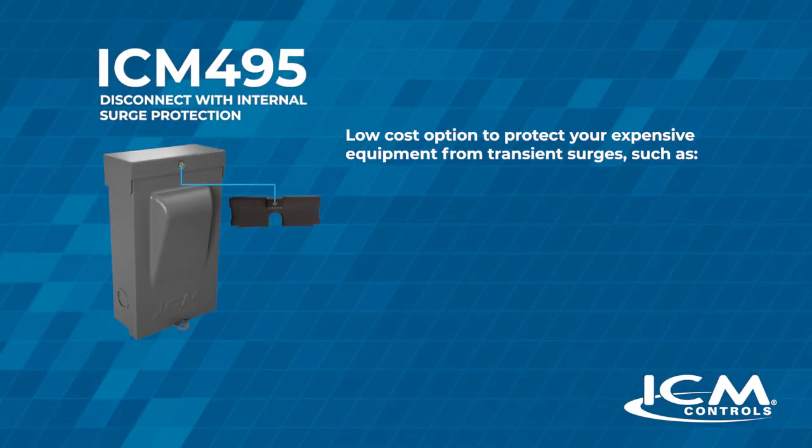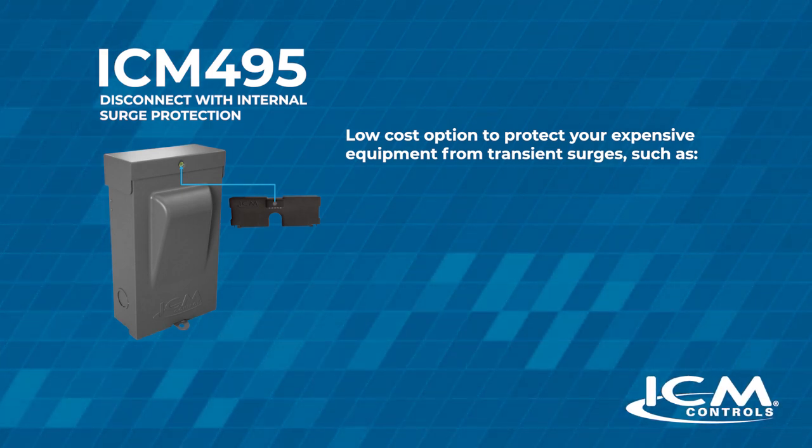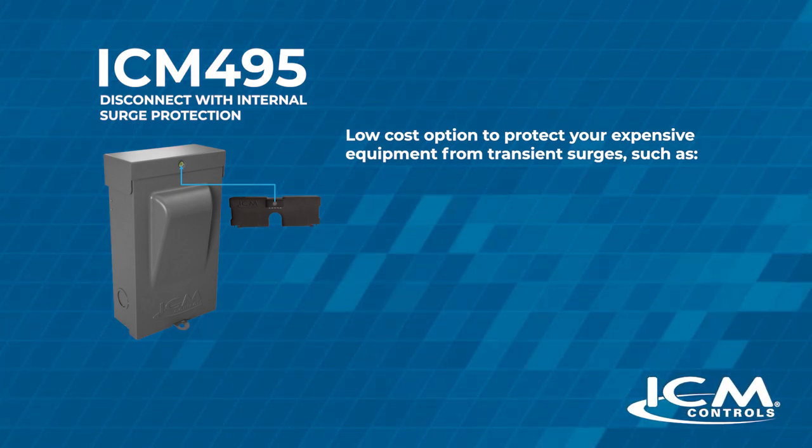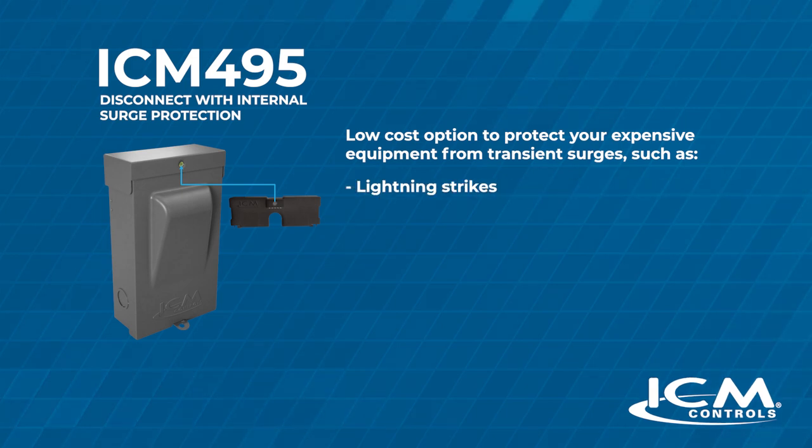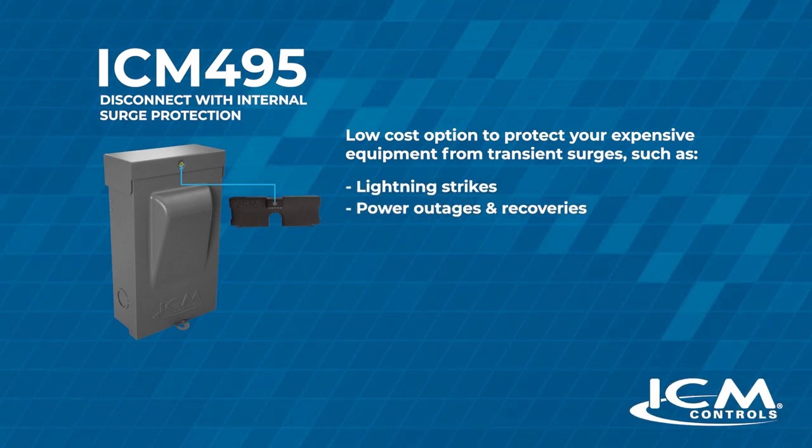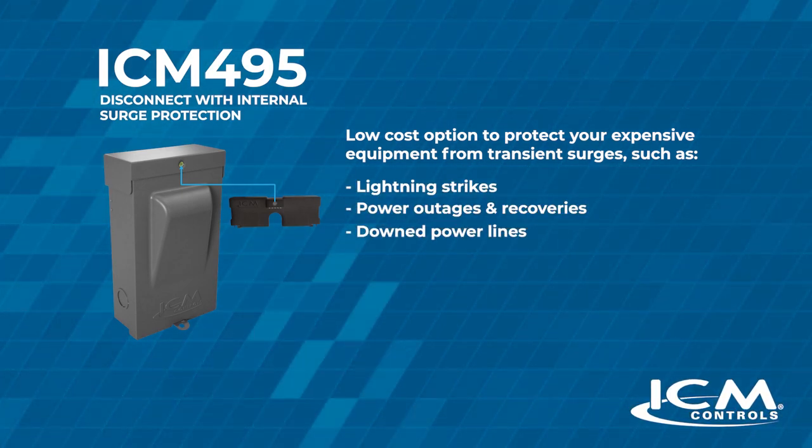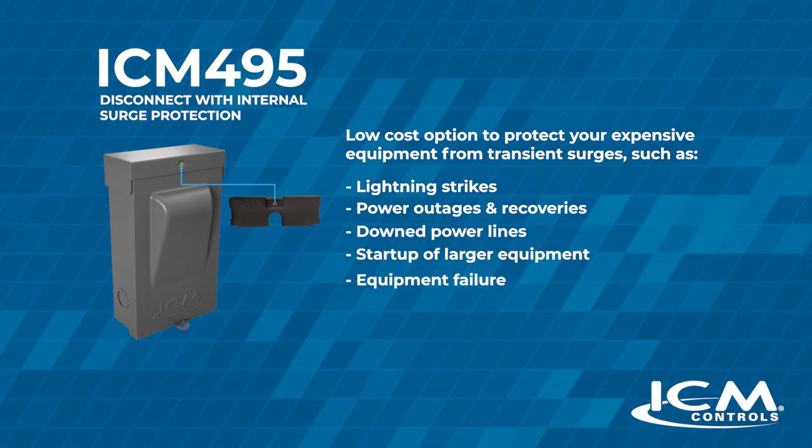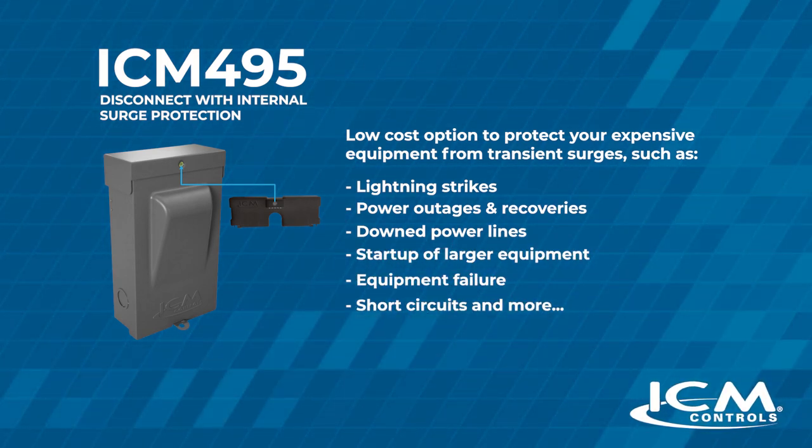The ICM 495 is a low-cost option to protect your expensive equipment from transient surges. Where do transient surges come from? Lightning strikes, power outages and recoveries, downed power lines, the startup of larger equipment, equipment failure, short circuits and many other sources.